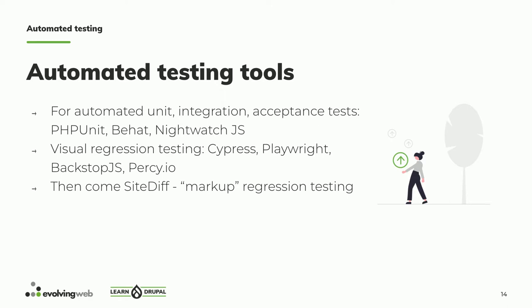So we tried to find automated testing tools. In Drupal, we're familiar with PHPUnit, Behat, and Nightwatch JS. We also tried some visual regression testing tools like Cypress, which is very popular. Recently we've been working with Playwright, which is backed by Microsoft, and Backstop and Percy IO. And there's one interesting tool we developed at Evolving Web called SiteDiff, which allows you to compare the markup of the site.